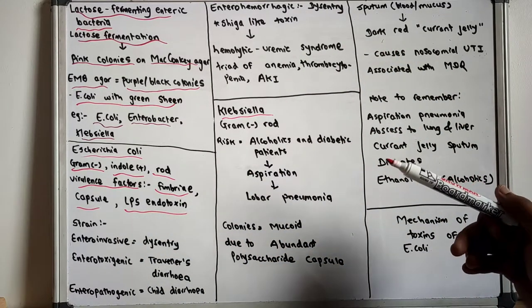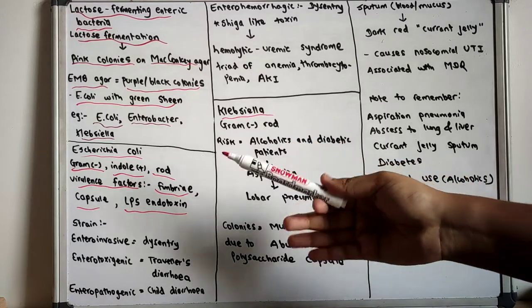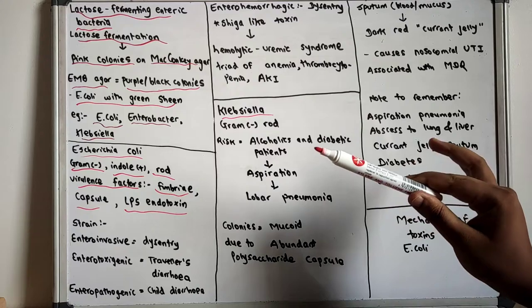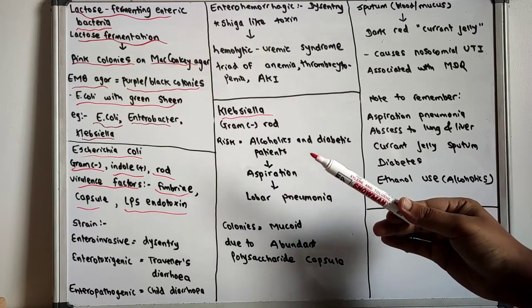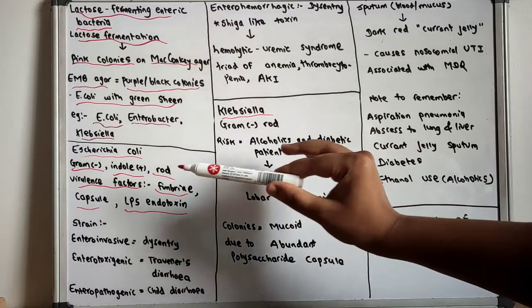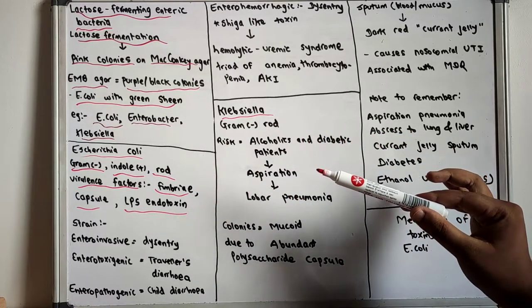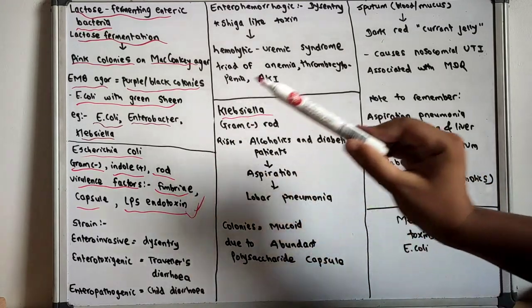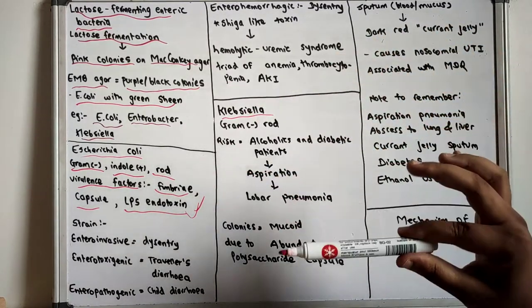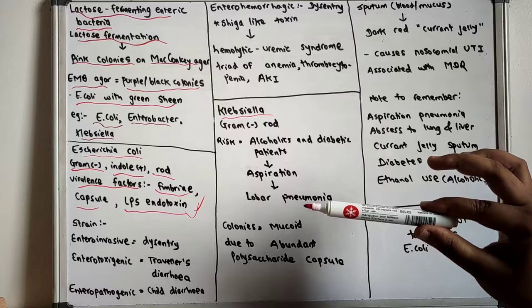Fimbria, capsule, and lipopolysaccharide endotoxins are the virulence factors of E. coli. The fimbria causes cystitis and pyelonephritis, whereas the capsule causes pneumonia and neonatal meningitis. The lipopolysaccharide endotoxin causes septic shock. These are the three very important virulence factors that you should know in E. coli.